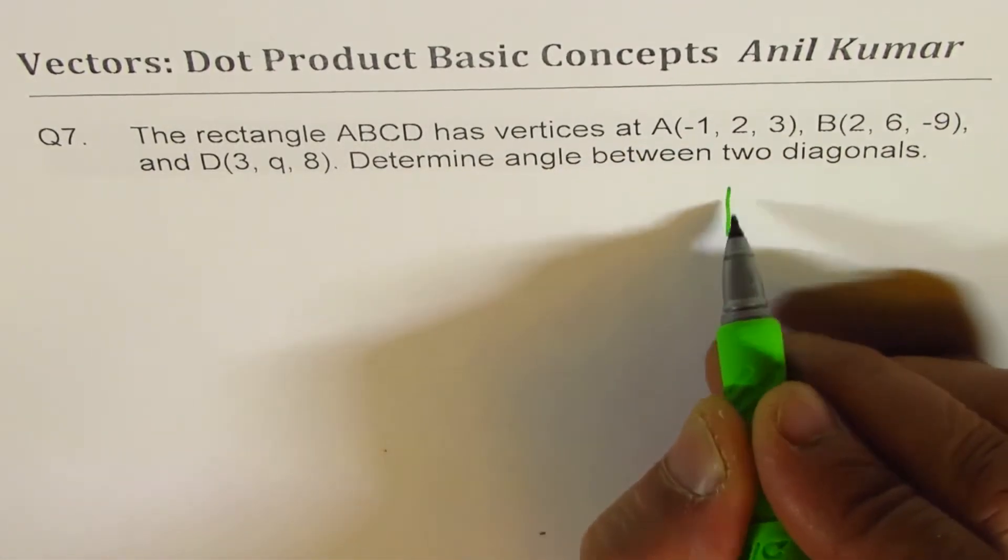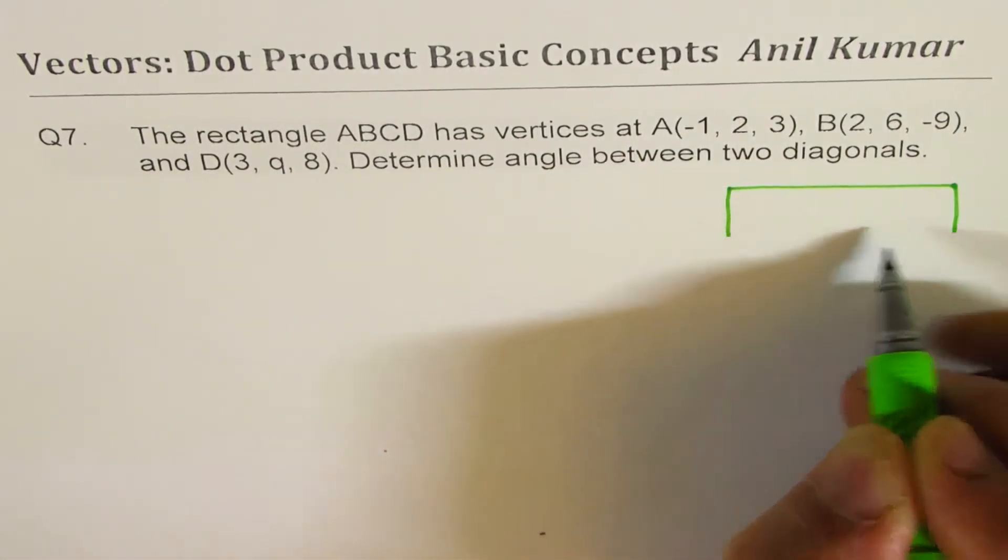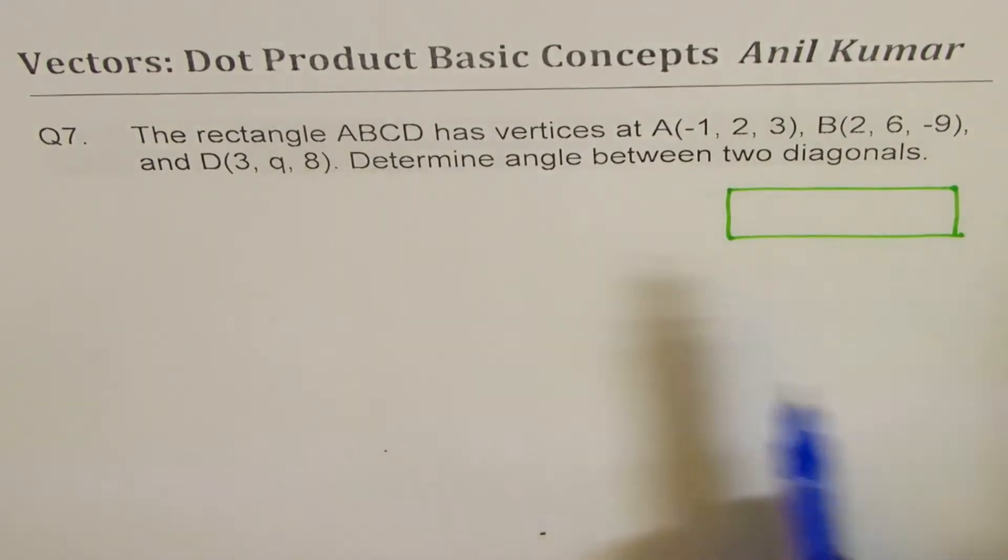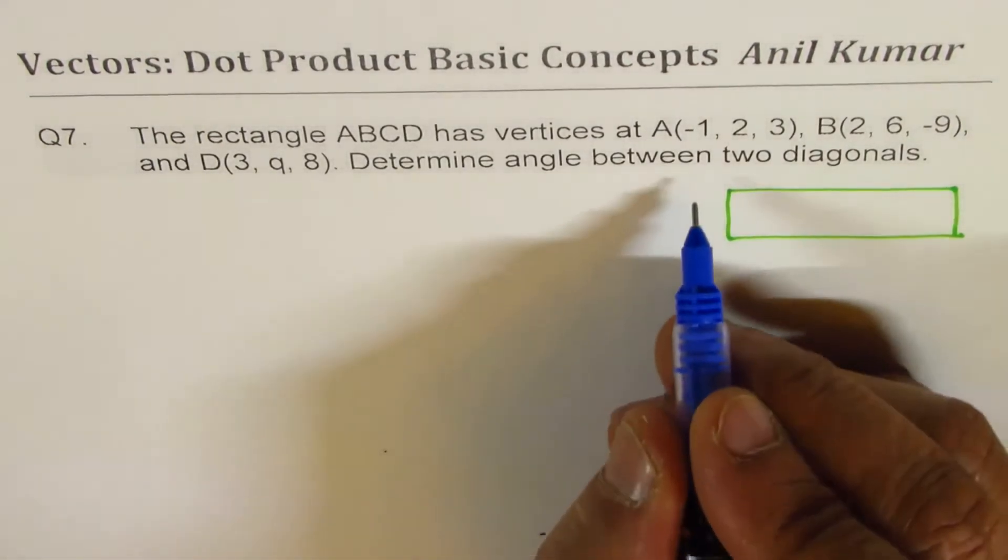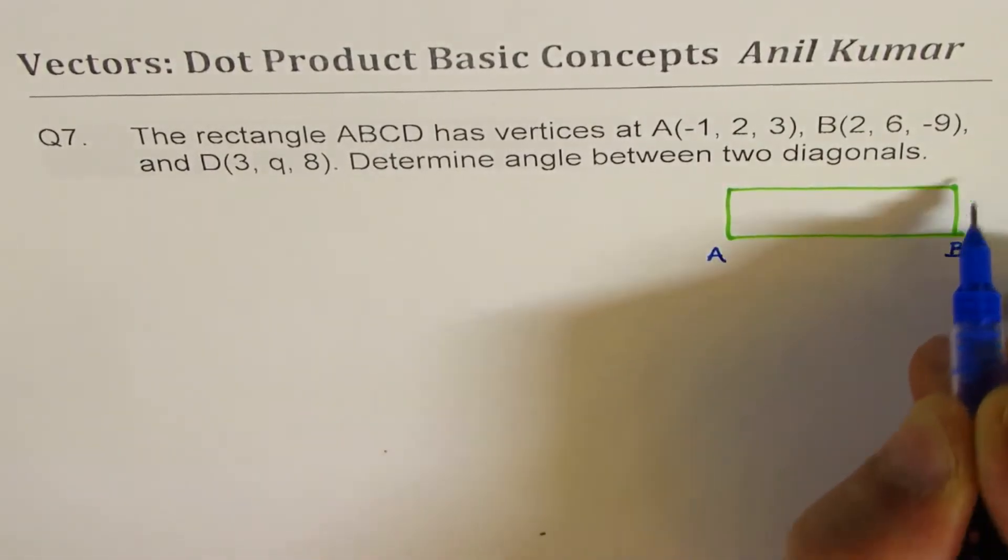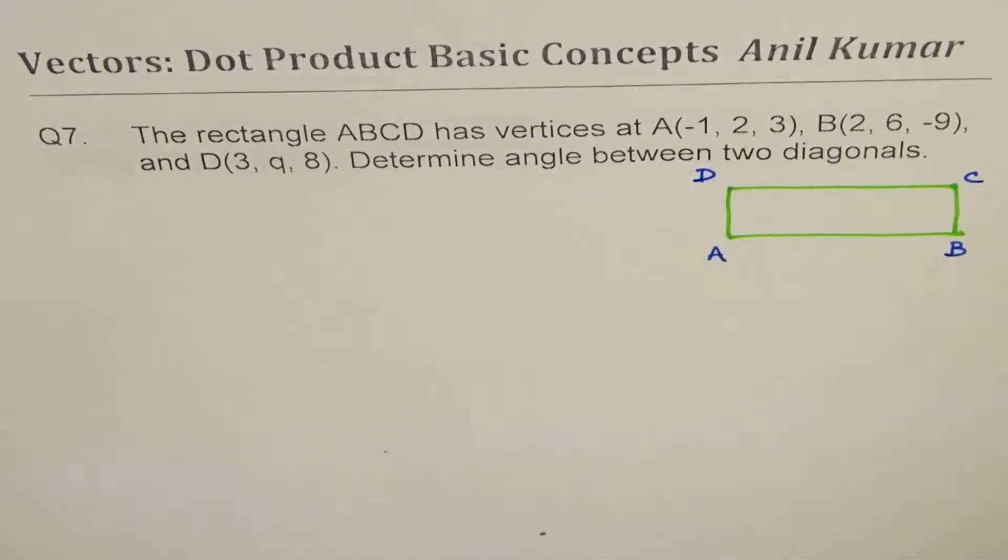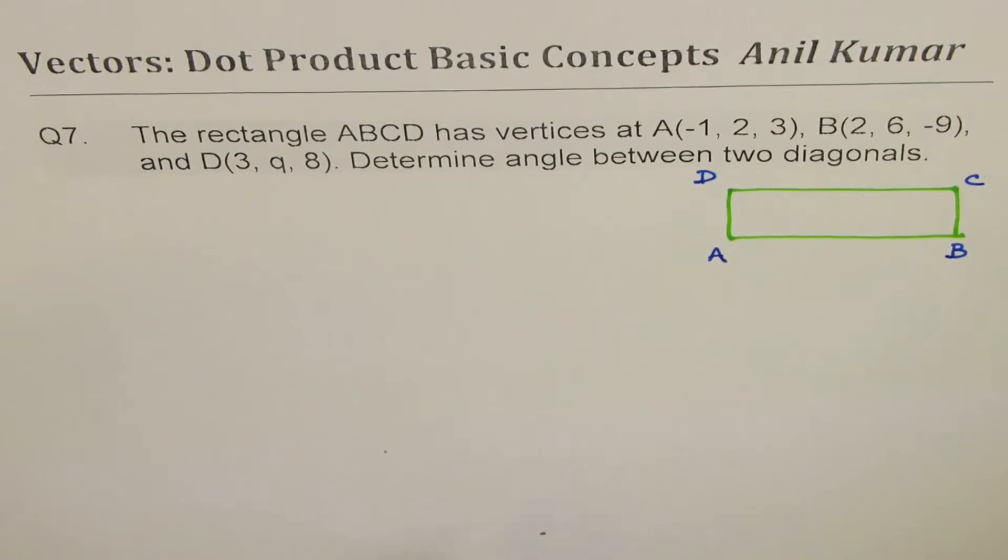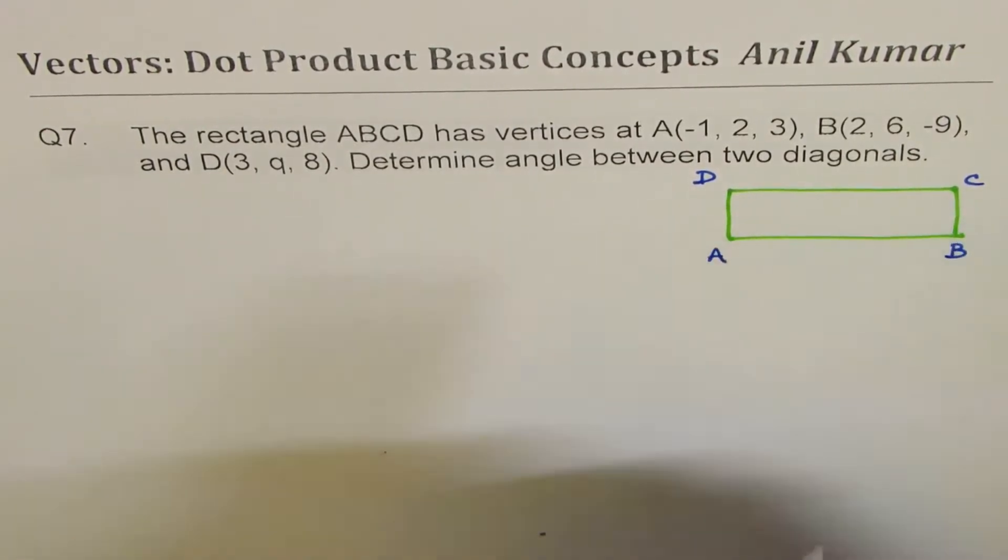So let me just make a rectangle here. Always write in a particular order. If you want to write A here, begin with A, B, C, and D. So in a particular order, you could go clockwise or counterclockwise.